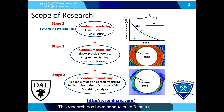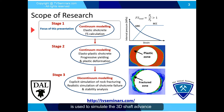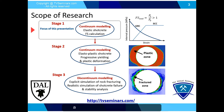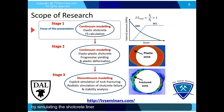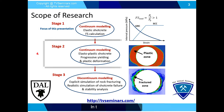This research has been conducted in three main stages. In the first stage, a 2D finite element model is used to simulate the 3D shaft advance to determine the load factor of safety using the convergence confinement method, as well as the thrust-moment diagram by simulating the shotcrete liner using structural elements with elastic properties. This will be the focus of this presentation.